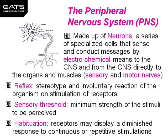A neuron is a specialised cell which has an elongated process coming out of it known as an axon. This axon has a myelin sheath around it, which is like an insulating material that prevents it from reacting with the next neuron which may be lying alongside it. They can conduct messages by electrochemical means to the central nervous system and from the central nervous system directly to the organs and muscles.